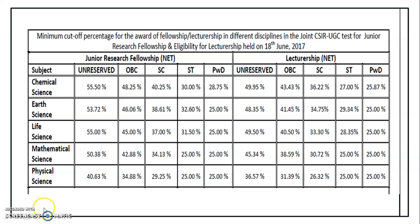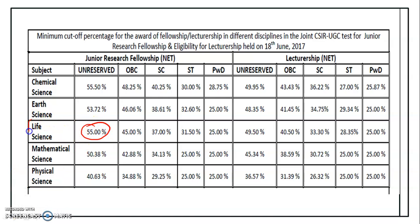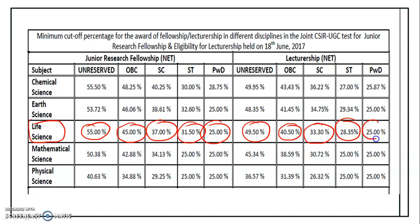For June 2017 life science cutoffs, the unreserved category JRF was 55%, OBC 45%, SC 37%, ST 31%, and PWD 25%. For lectureship, unreserved was 49.50%, OBC 40.50%, SC 33.30%, ST 38.35%, and PWD 25%.